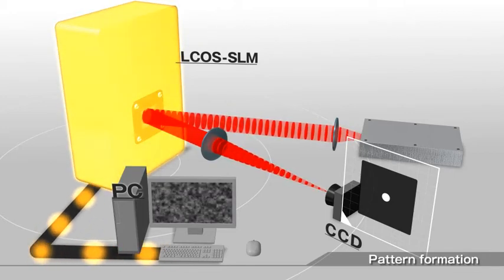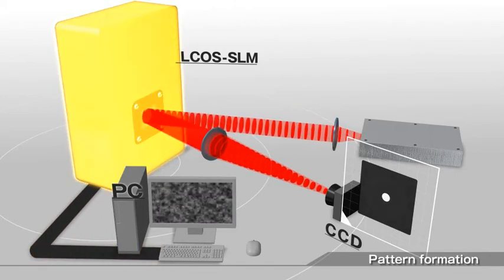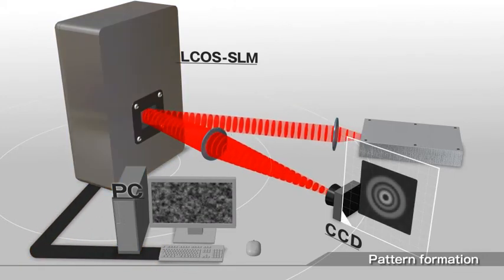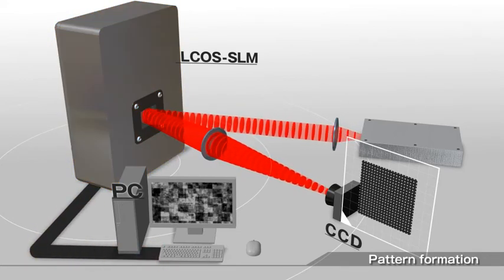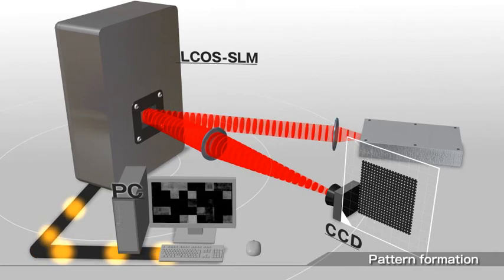On the other hand, inputting a computer-generated hologram into the L-COS SLM allows forming a desired light distribution that efficiently utilizes the light on a light condensing surface.